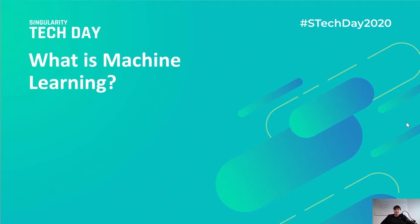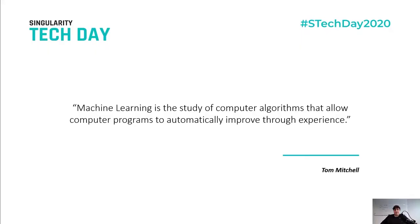Let's start with a very easy definition of what machine learning is. When we refer to machine learning, we are referring to the study of computer algorithms that allow computer programs to automatically improve through experience. It means that we're going to have some algorithms in which we fit our data, and what we expect the computer to do is actually predict or classify the data we give it.